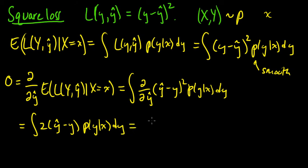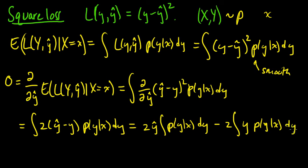And now what happens? Let's expand this out. So ŷ is a constant, so we can pull it out. Minus 2 times y, p(y|x), dy. And now, what do we have? So things are looking good here. This is a conditional probability distribution, and we're integrating over all possible values of y, so this just integrates to 1.